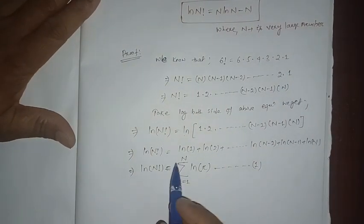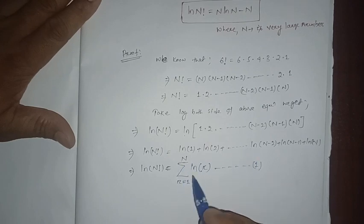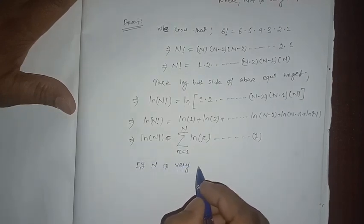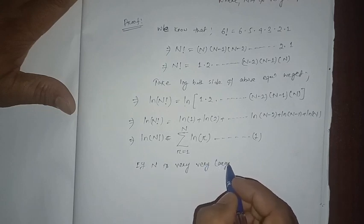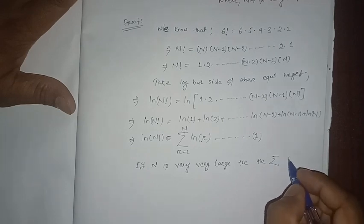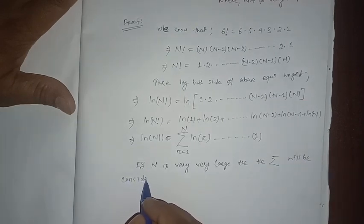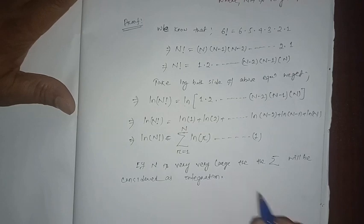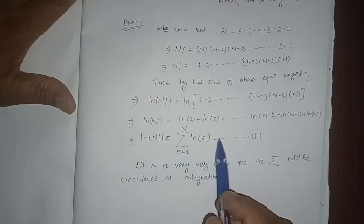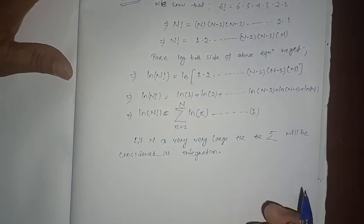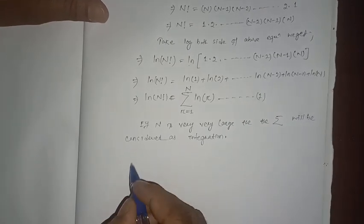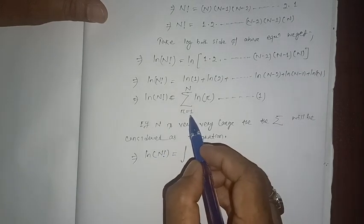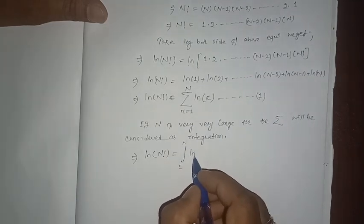Here you can see that if n is very very large, then this summation will be treated as integration, because when n is so large the right-hand side looks like continuous data, and continuous data can be represented by integration. So that implies ln(n!) will be equal to the integral from 1 to n of ln(r) dr.